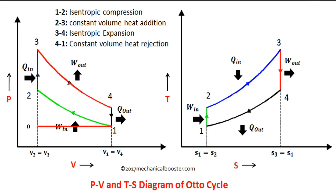Myself Jeevan Dilipchawan. I am presenting the Otto cycle graphs. The Otto cycle can be represented on a pressure-volume PV diagram and a temperature-entropy TS diagram. The first process, 0 to 1: air is drawn into the piston-cylinder arrangement at constant pressure.